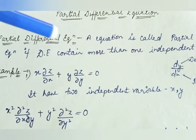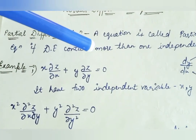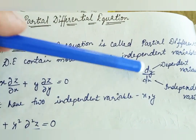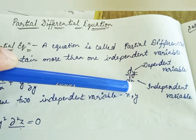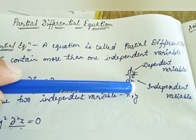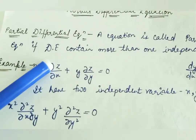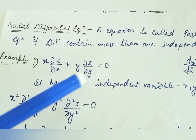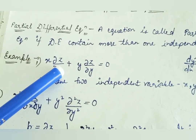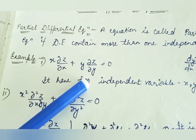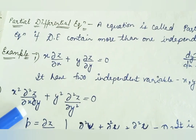A question is called a partial differential equation if it contains more than one independent variable. If any equation has more than one independent variable involved, it is a partial differential equation. For example, if there are two independent variables x and y, it is a partial differential equation.